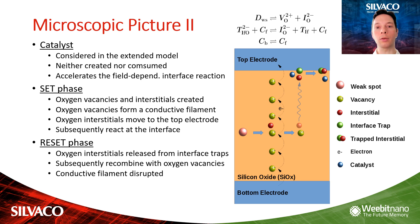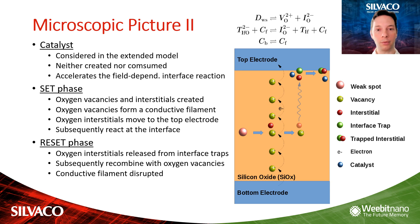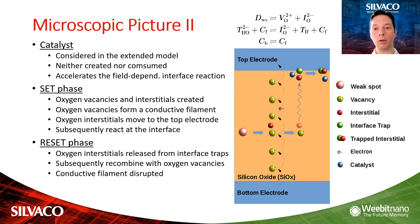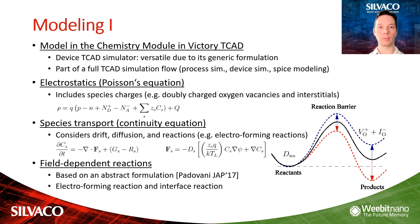During the set phase, the electroforming reaction creates oxygen vacancies and oxygen interstitials. While the oxygen vacancies form a conductive filament, the oxygen interstitials are drifted to the top electrode and undergo an interface reaction. Therefore, the oxygen interstitials are not available for the reverse electroforming reaction and the conductive filament remains stable. During the reset phase, the interface releases oxygen interstitials again and they recombine with the oxygen vacancies, associated with the rupture of the conductive filament.